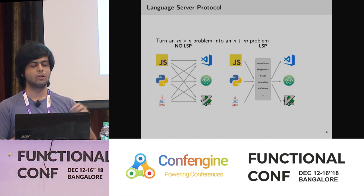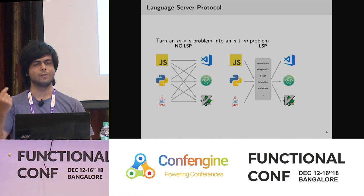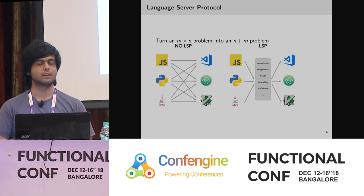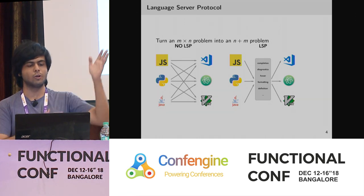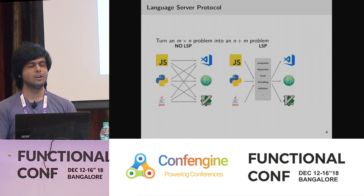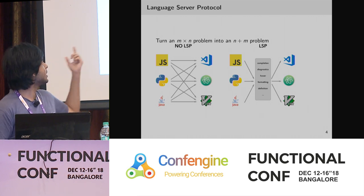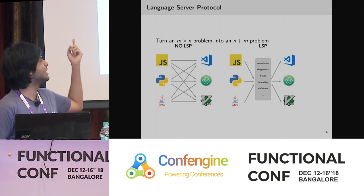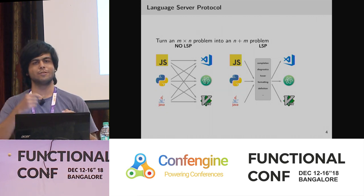If you want to use JavaScript auto-completion or diagnostics in Vim, you need to write a JavaScript plugin in Vim, another for Atom, another for VS Code, another for Emacs, and across all editors. So for each language there has to be a plugin for each editor.